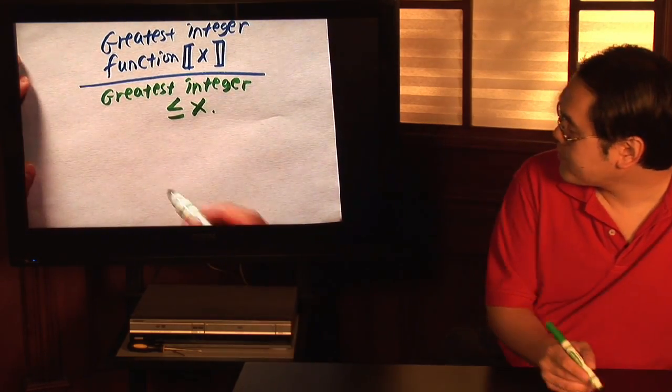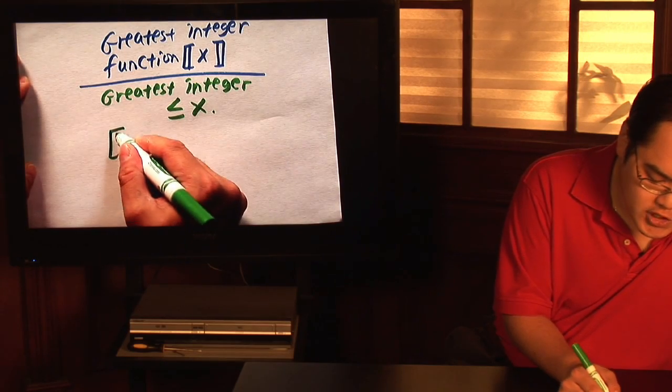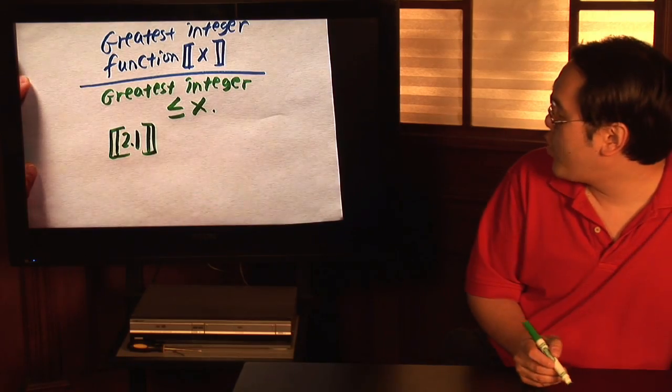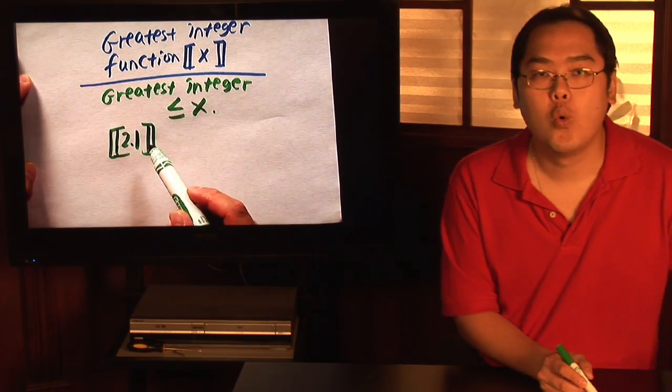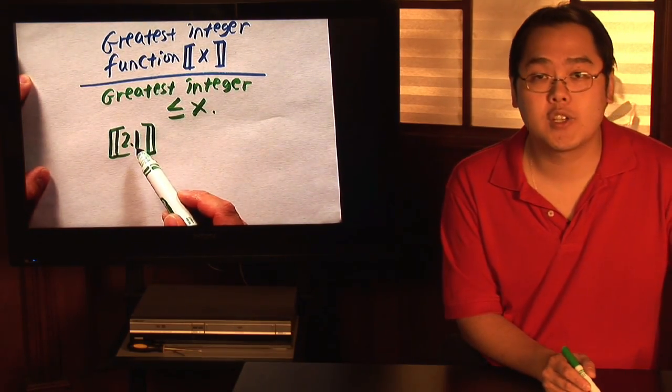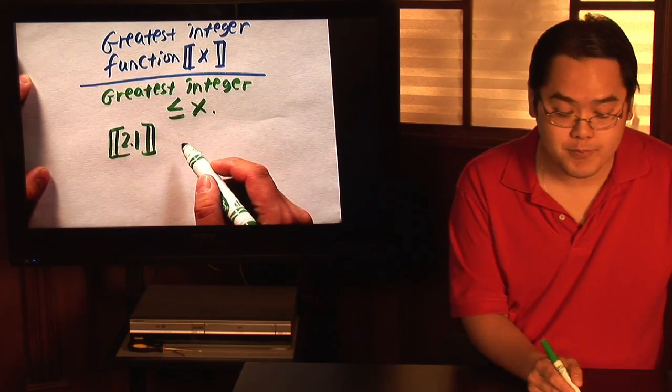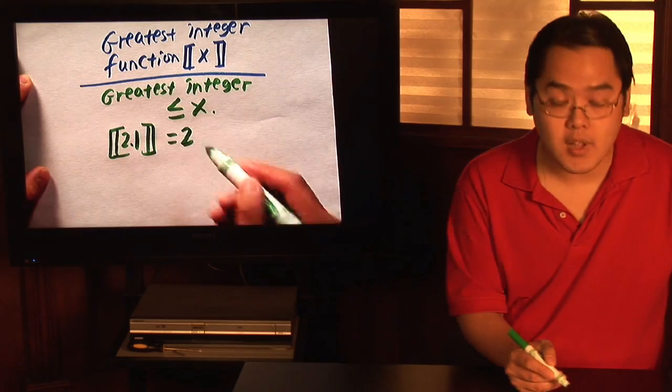For example, suppose you want to find the greatest integer of 2.1. What you want to think about is: what is the greatest whole number less than or equal to 2.1? Well, that would simply be 2.